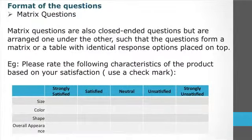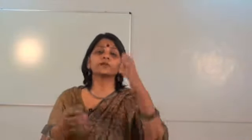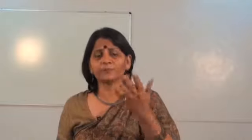There are also matrix questions, which are closed-ended questions arranged one under the other such that the questions form a matrix or table with identical response options placed on top. For example, to assess the characteristics of a product like Johnson & Johnson baby lotion, I would evaluate size, color, shape, and overall appearance of the pack, rating each as strongly satisfied, satisfied, neutral, unsatisfied, or strongly unsatisfied. This matrix format can be used effectively for such evaluations.